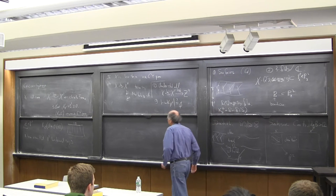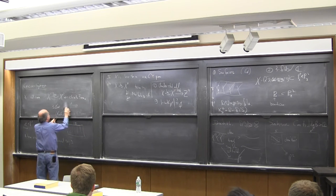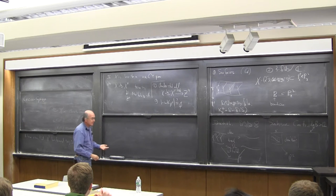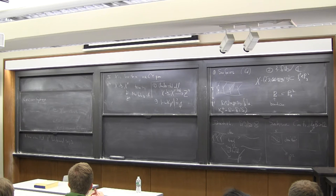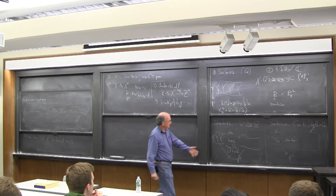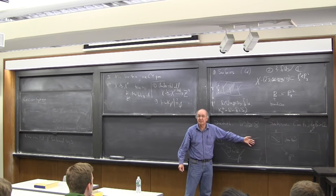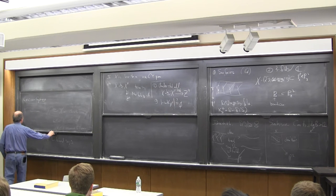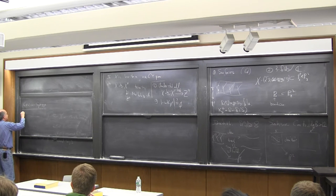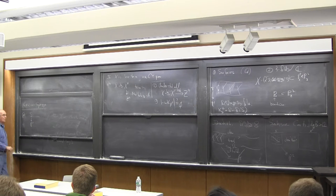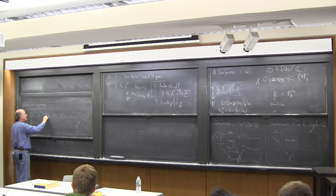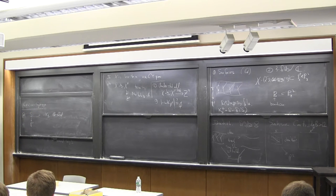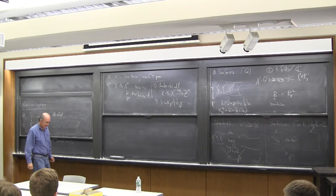The key elementary question remaining is: for a surface conic bundle, is minus K_X effective, or at least is some multiple effective? Concretely: given a surface conic bundle S over P1, is minus K_S at least Q-linearly equivalent to some effective divisor? This turns out to be a subtler question than expected.